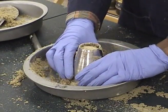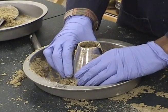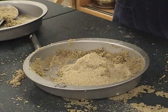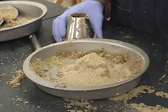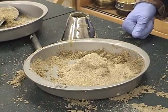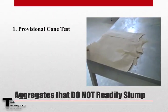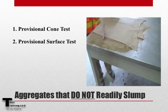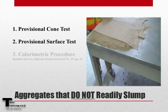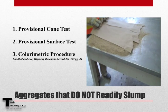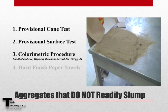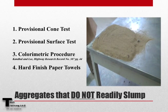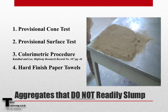When the sample slumps slightly, it is considered to be in the saturated surface dry condition. For aggregates that do not readily slump, there are alternative procedures for preparing the sample: the provisional cone test, the provisional surface test, the colorimetric procedure, and the procedure using a hard finish and paper towels. These procedures can be found in Section 7, Note 2 of AASHTO T84.